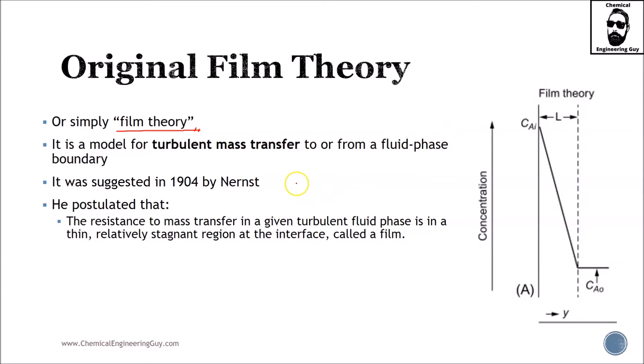It's very straightforward and similar to momentum transport. It was suggested by Nernst in 1904. He postulated that the resistance to mass transfer in a turbulent fluid is given by a thin stagnant region, which we call a film.